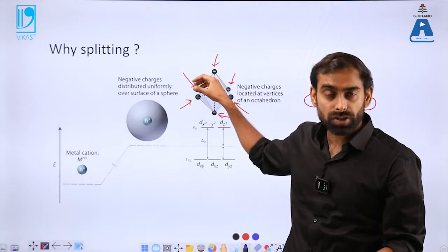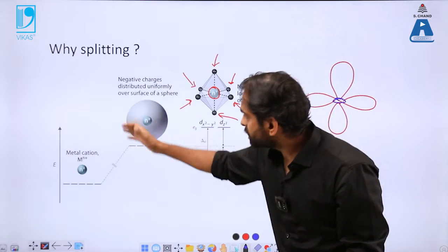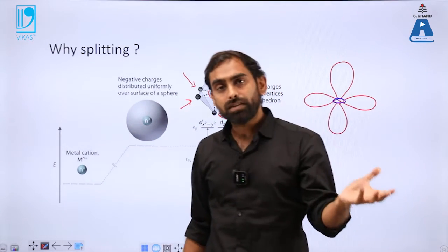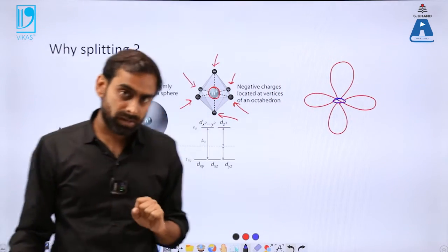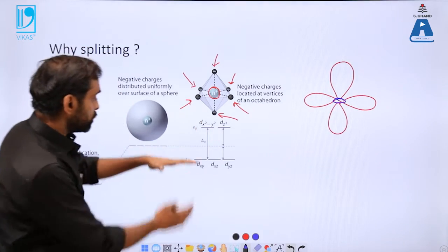So there will be a generation of asymmetry because of this. And now after the ligand approaches a metal ion, the charge distribution which was otherwise spherical will not remain spherical. So that leads to splitting.